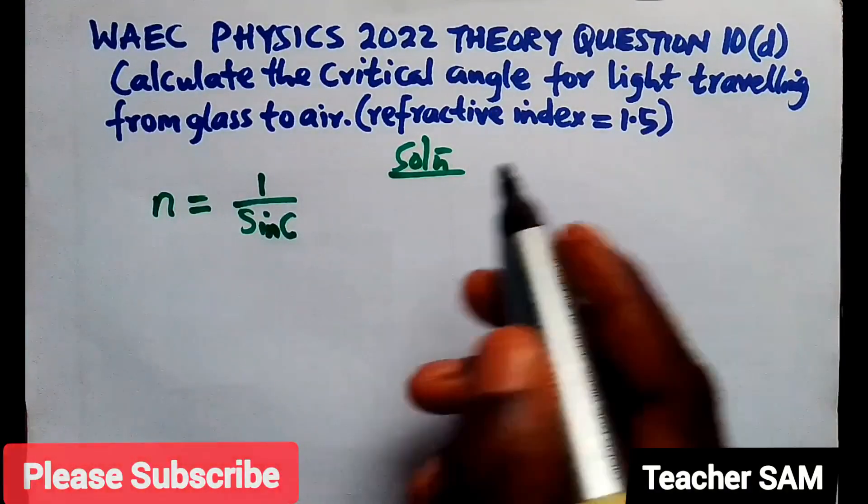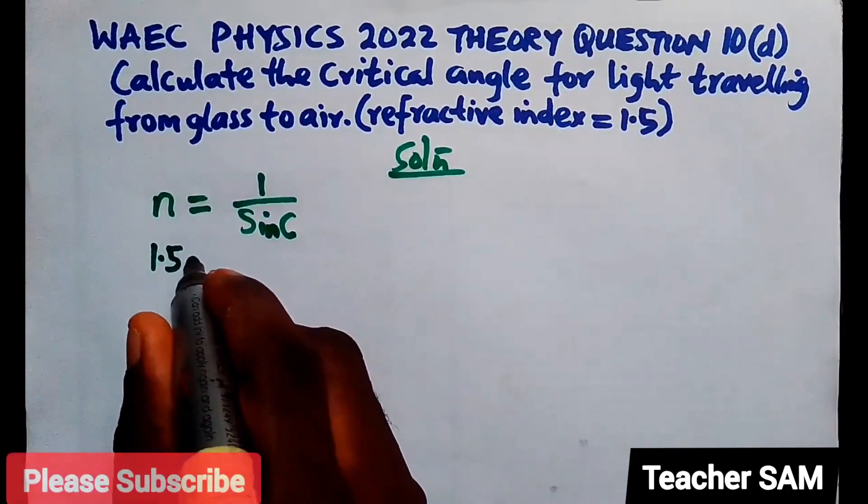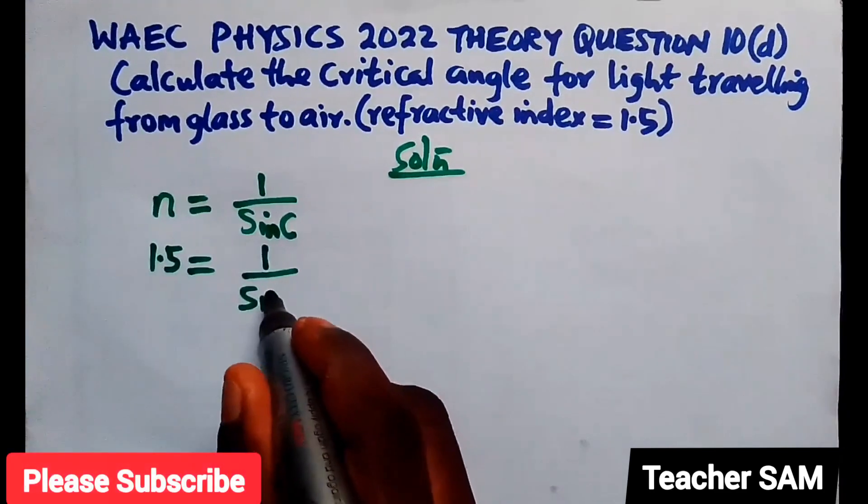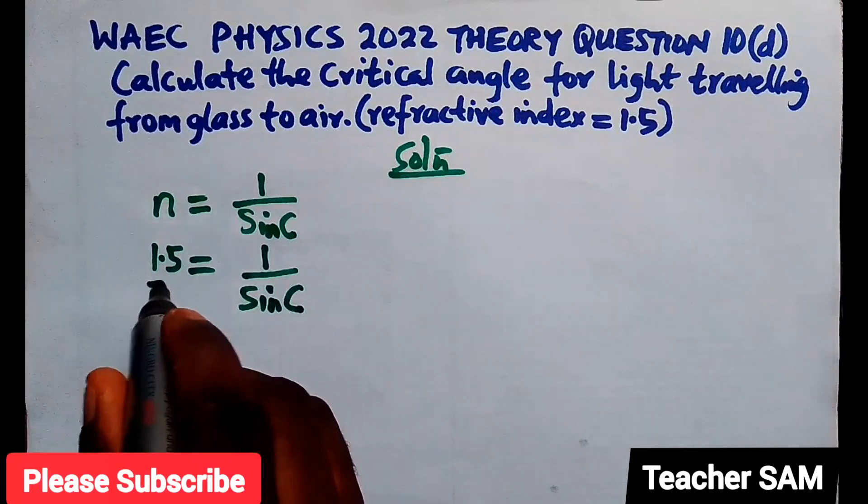The refractive index here is given as 1.5, so let's substitute: 1.5 equals 1 over sine c. All we need to do is cross multiply.